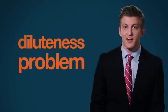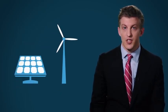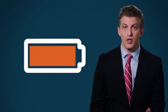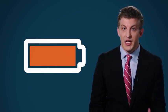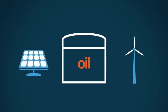And as big a problem as diluteness is, it's nothing compared to the intermittency problem. The sun doesn't shine all the time, and the wind doesn't blow all the time. The only way for solar and wind to be truly useful would be if we could store them, so that they would be available when we needed them. You can store oil in a tank. Where do you store solar or wind energy?